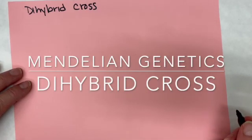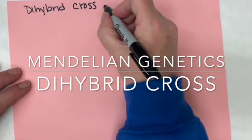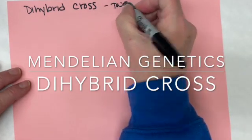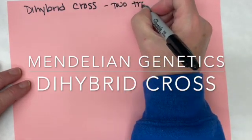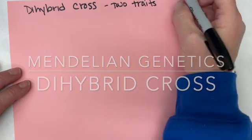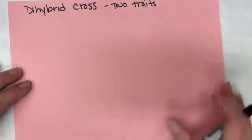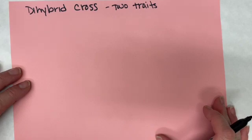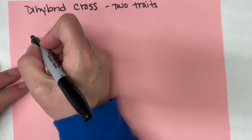Hi and welcome to a quick tutorial on how to do a dihybrid cross in genetics. Dihybrid crosses are a little more challenging than monohybrid crosses because we are looking at two traits at the same time and keeping track of both of those traits as we go through the cell division and fertilization process.